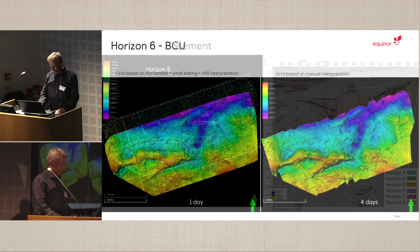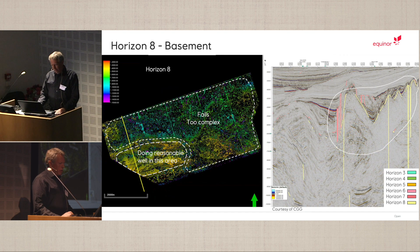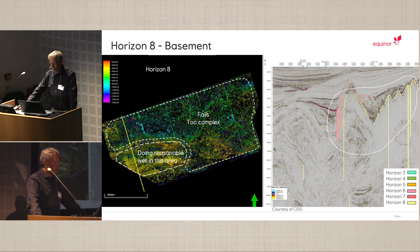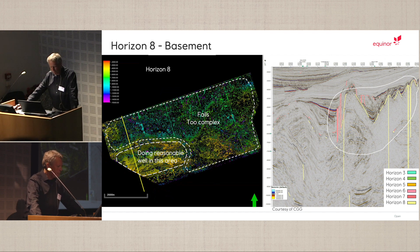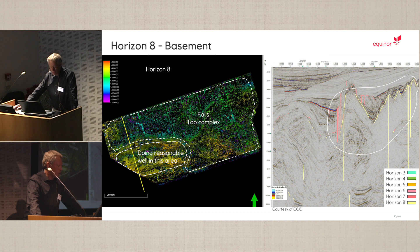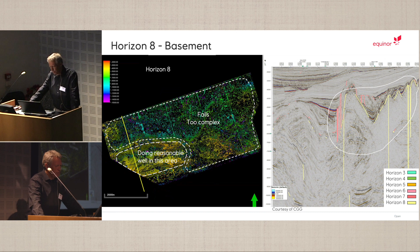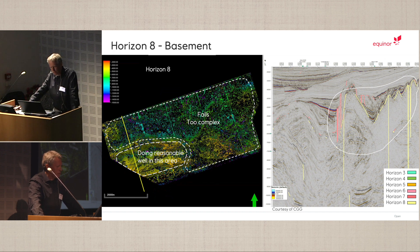However, HorizonNet doesn't work everywhere. In this case, basement is a very difficult pick due to the depth, the seismic signal, and the changing expression. The result from HorizonNet does a reasonable job in the areas we circled, but it really fails when the horizon is too complex — in about 75% of the area.